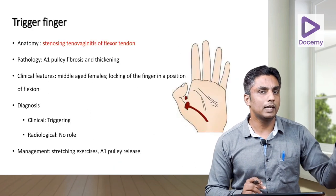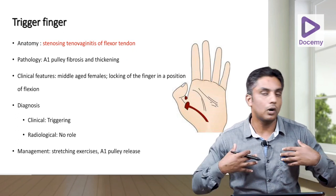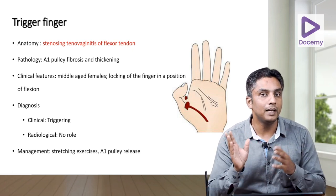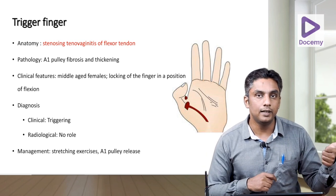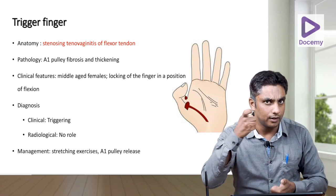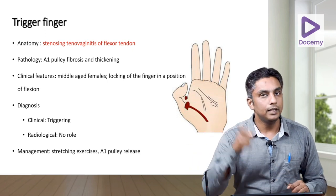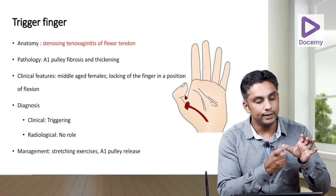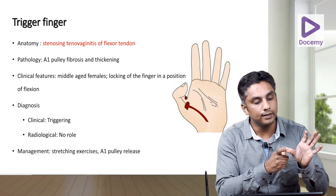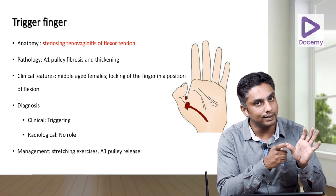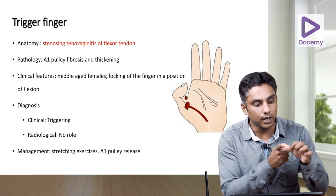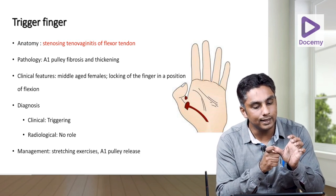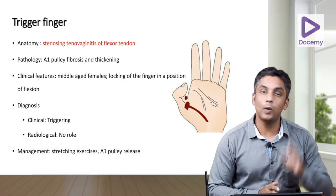Now trigger finger. Trigger finger, De Quervain's, and carpal tunnel syndrome are all disorders commonly seen in middle-aged females. A trigger finger is like pulling the trigger of a gun — the patient has a flexion deformity of the digit, and sometimes cannot passively extend it. Once an attempt is made to passively extend it, it fires with a snap like a pistol — that's why it is called trigger finger. The pathology is stenosing tenosynovitis involving the A1 pulley.